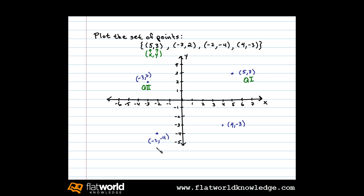The point negative two, negative four is in quadrant three. And here the point four comma negative three is in quadrant four.